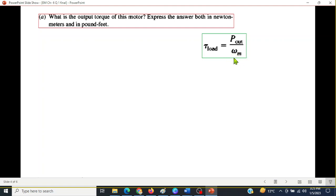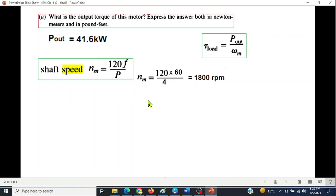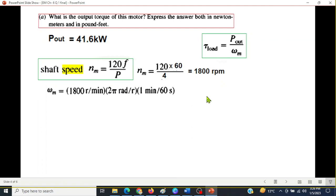T_load is P_out over omega_m. P_out we have calculated, we don't know the speed omega_m or the angular rotational frequency or speed. The angular speed can be calculated from the shaft speed. Shaft speed is given by this formula: 120 multiplied by frequency divided by P. In our case the frequency is given to be 60 and there are four poles. So this is the shaft speed in revolutions per minute, but we need angular speed which is radians per second. So we multiply it by 2π and divide it by 60.